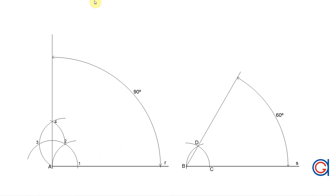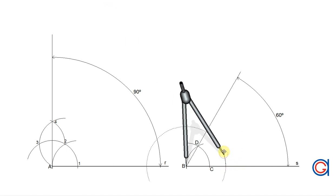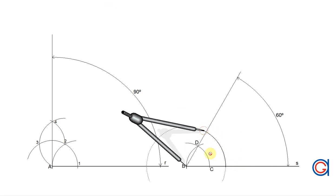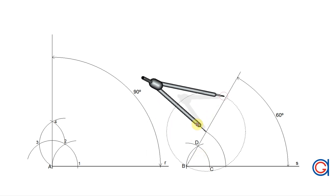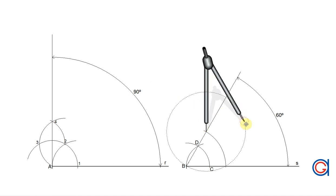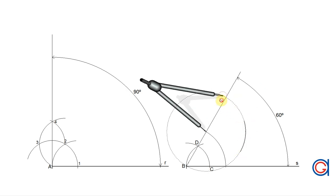Now we are going to draw the angular bisector of the 60 degree angle. To do this we set our compass to whatever radius we like again and setting it on the point B we scribe an arc until it cuts both lines as shown here. These two points are going to be the center points of new arcs that will intersect each other at a new point which we will join to B to form the 30 degree angle.